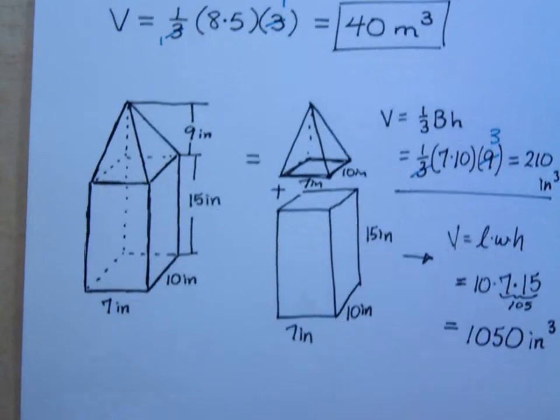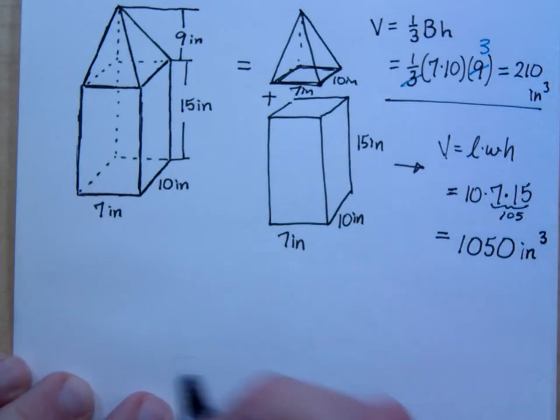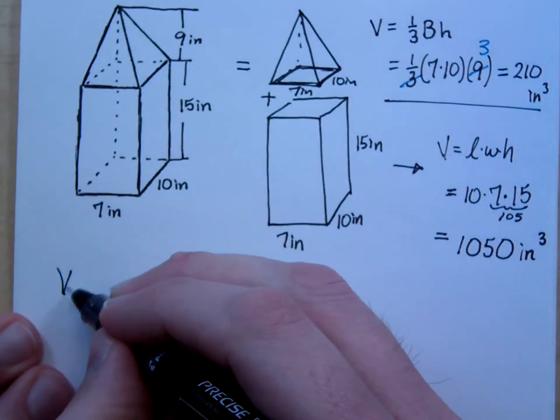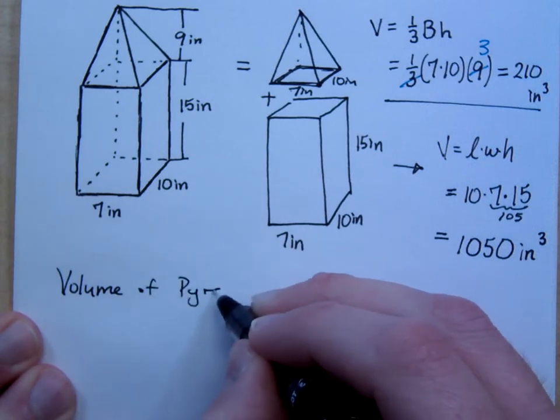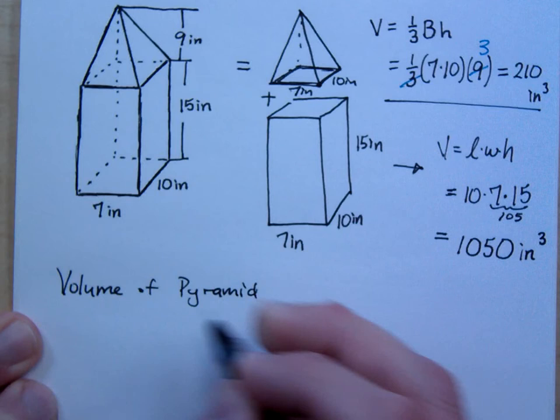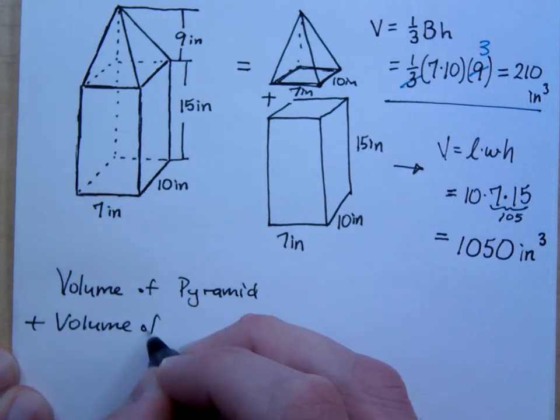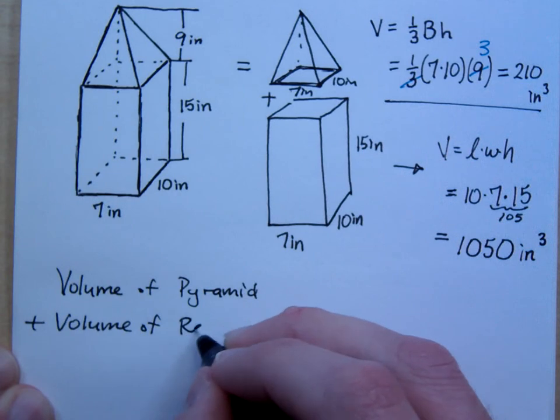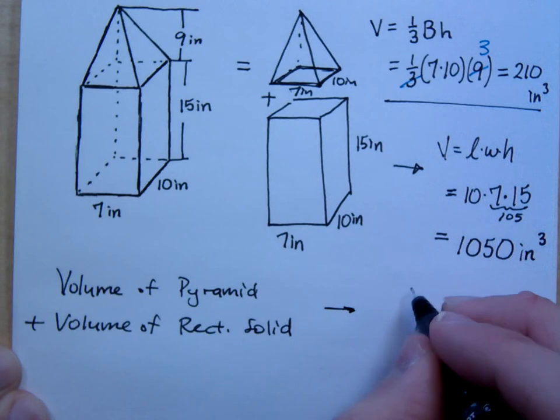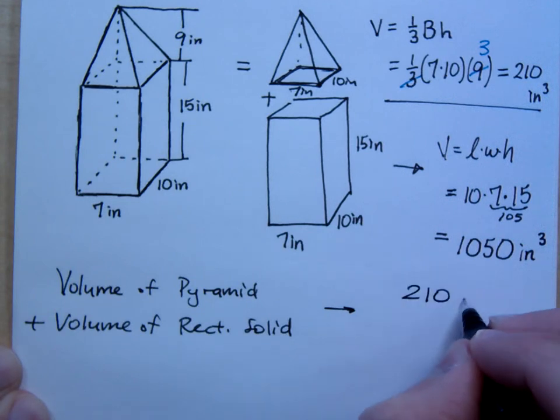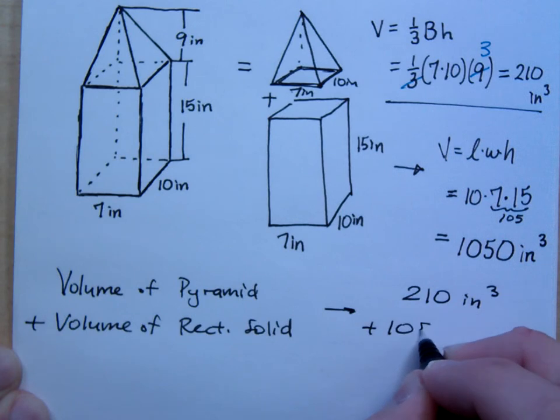Okay, so when I put all of this together, I have the volume. The volume of the pyramid plus the volume of the rectangular solid. And so, we do the math here. That's 210 cubic inches plus 1,050 cubic inches. And what is that?